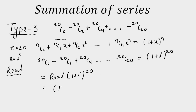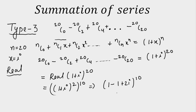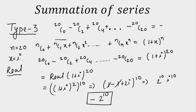Now calculate the real part of (1+i)^20. Write it as [(1+i)²]^10 = (1 + 2i + i²)^10 = (2i)^10 = 2^10 · i^10. Since i^10 = i^2 = −1, we get −2^10. So the sum of this series is −2^10.